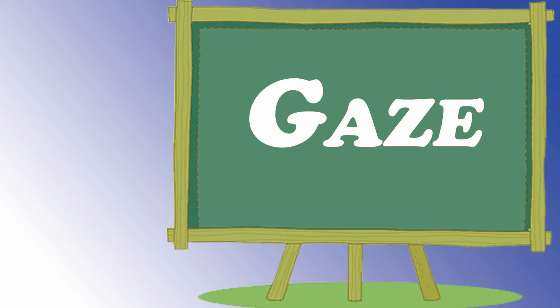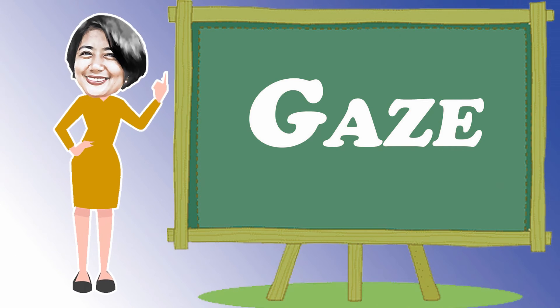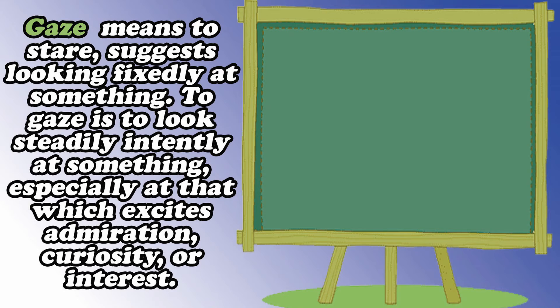Another visual element is what we call gaze. Gaze means to stare, such as looking fixedly at something. To gaze is to look steadily and intently at something, especially at that which excites admiration, curiosity, or interest. This is an example of a picture showing gaze.